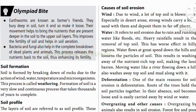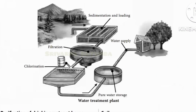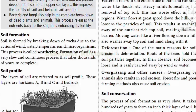Bacteria and fungi help in the complete breakdown of dead plants and animals. This process releases nutrients back into the soil, thus enhancing its fertility. Whatever nutrition was in dead plants and animals goes back into the soil, helping plants grow.